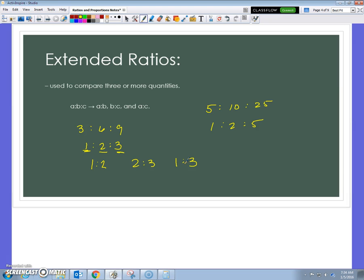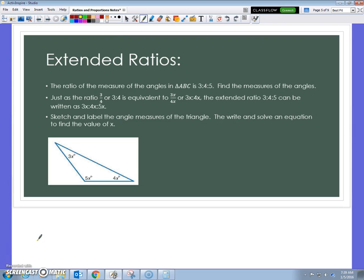These extended ratios are going to be nice for geometric shapes, especially because they have a lot of angles or a lot of sides. So, for a triangle, there's three angles. In this case, it says the measure of the three angles in triangle ABC is 3 to 4 to 5. So, find the measure of the angles. Well, we know things about triangles now. This is just a random triangle. And, the measures are 3 to 4 to 5, basically, is what that's saying.